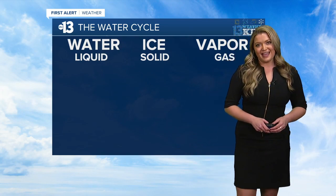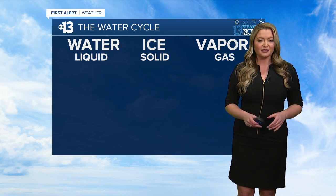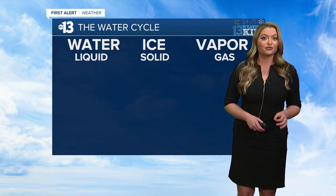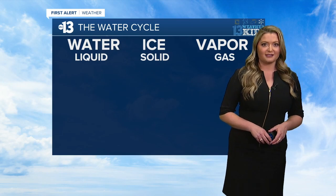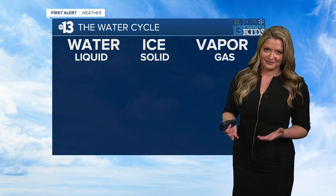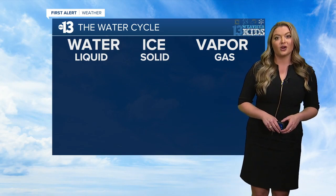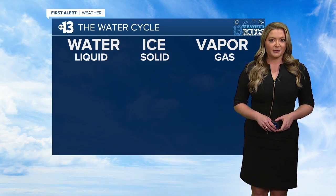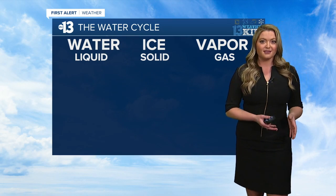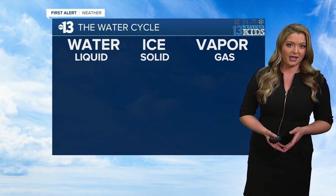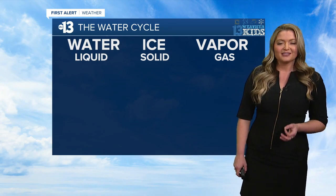The earth and the atmosphere are constantly recycling the exact same water through a process known as the hydrologic cycle, or water cycle. Water exists in three states: liquid — we all know what that looks like — solid ice, and gas, in this case water vapor. This allows water to be passed along the water cycle, transferring from state to state as it moves from oceans and lakes to the atmosphere and back to rivers and even underground.